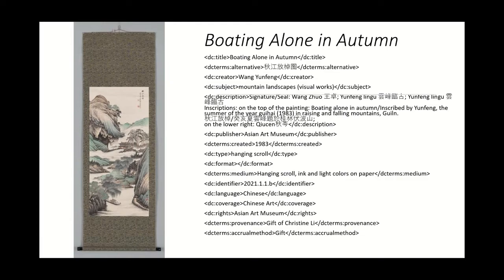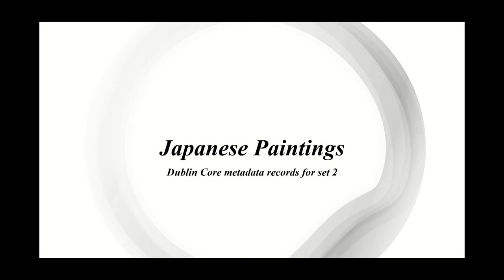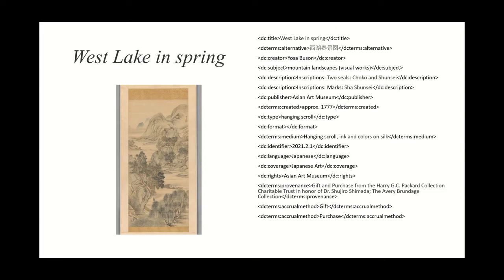Now for part two, these are the five Japanese paintings that I used in the Dublin Core Generator. The first is 'Westlake in Spring.' If you see the subject, it says 'Mountain Landscapes Visual Works.' For eHive and Dublin Core, eHive still uses the Getty Art and Architecture vocabulary. So I was able to look in that and find the correct terms for the subject and go by that.